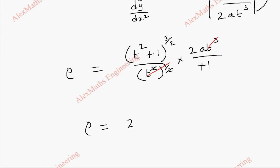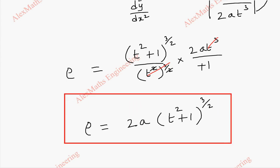So ρ is 2a times (t² + 1)^(3/2). So this is our required radius of curvature.